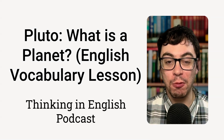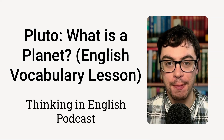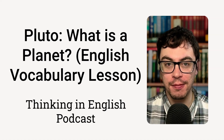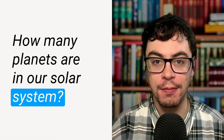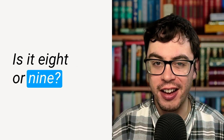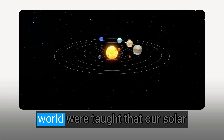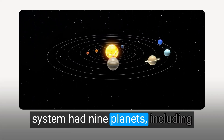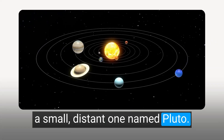Hello, I'm Tom Wilkinson and welcome to the Thinking in English podcast, a podcast for intermediate to advanced level English learners. How many planets are in our solar system? Is it eight or nine? For a long time, children around the world were taught that our solar system had nine planets, including a small, distant one named Pluto.